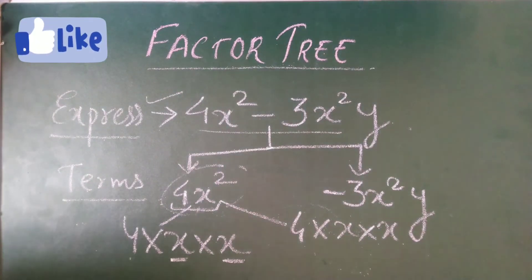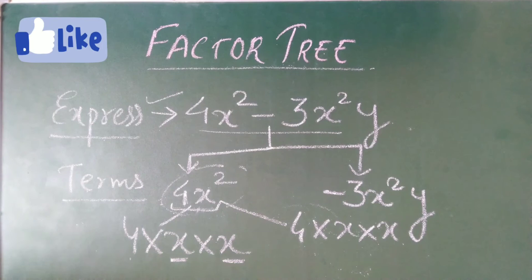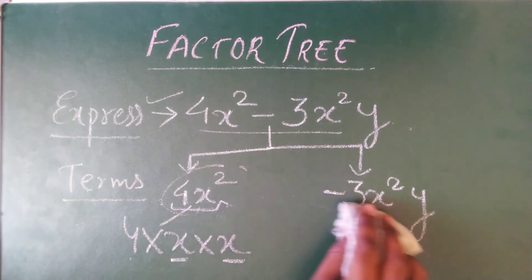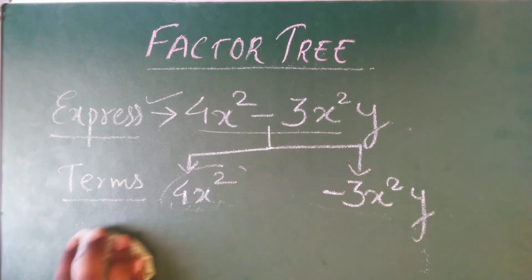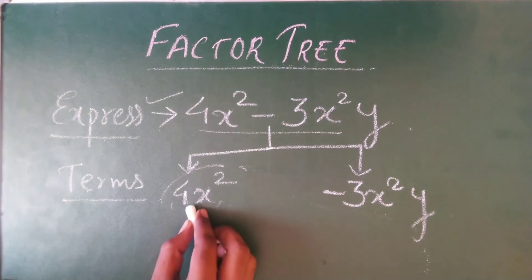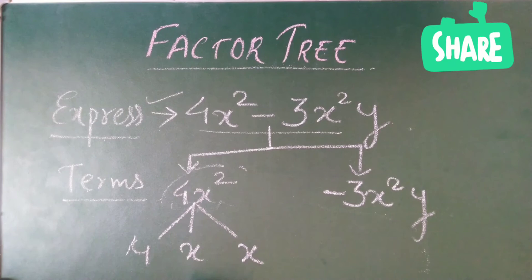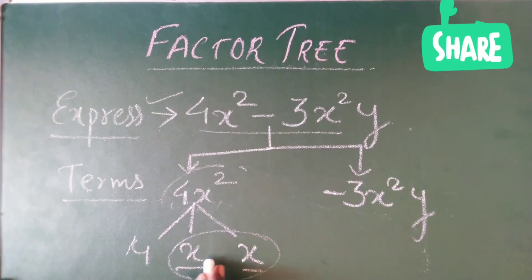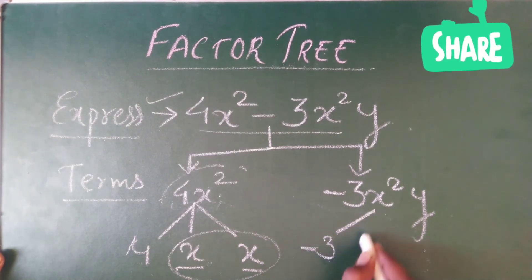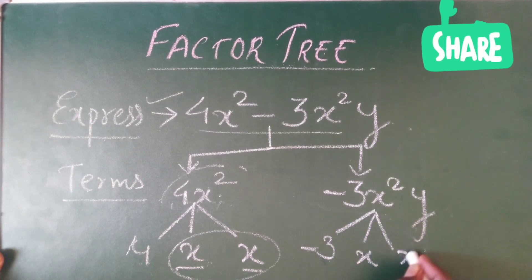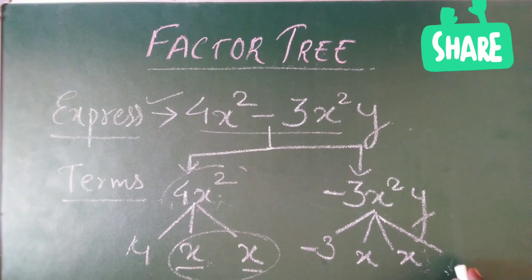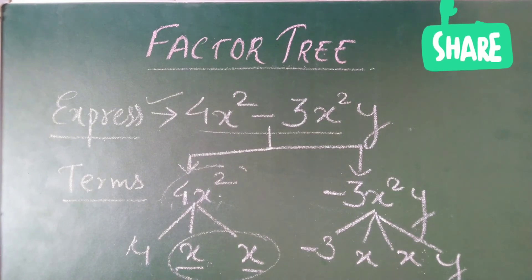Now we write the factors for both terms. For 4x², write 4, x, and x. For minus 3x²y, write minus 3, then x, then one more x, then y. So each term is split into its individual factors.